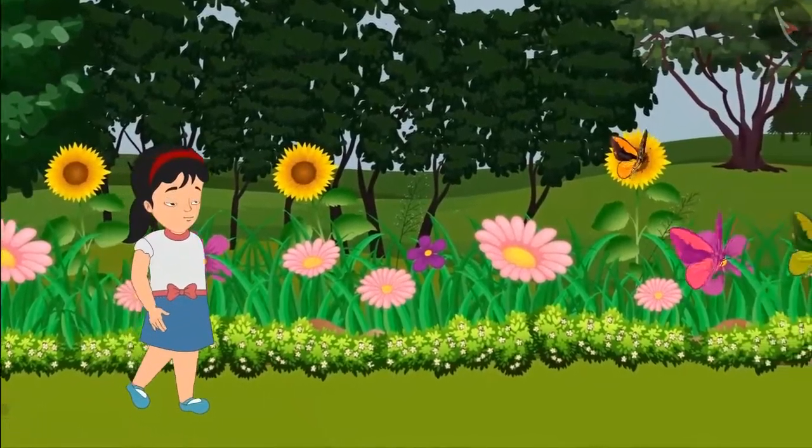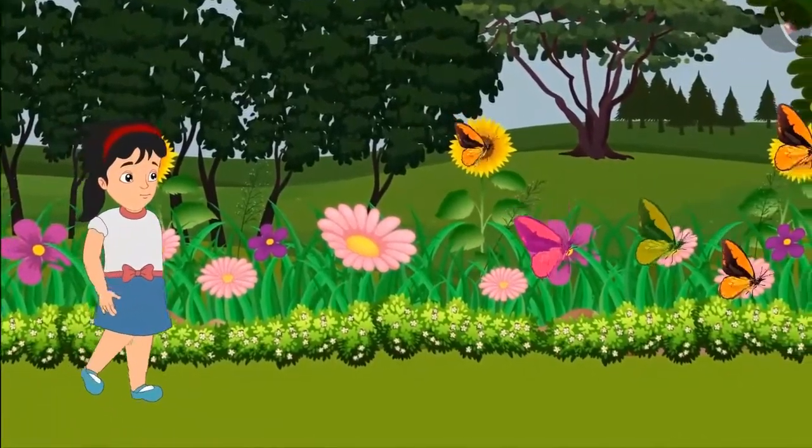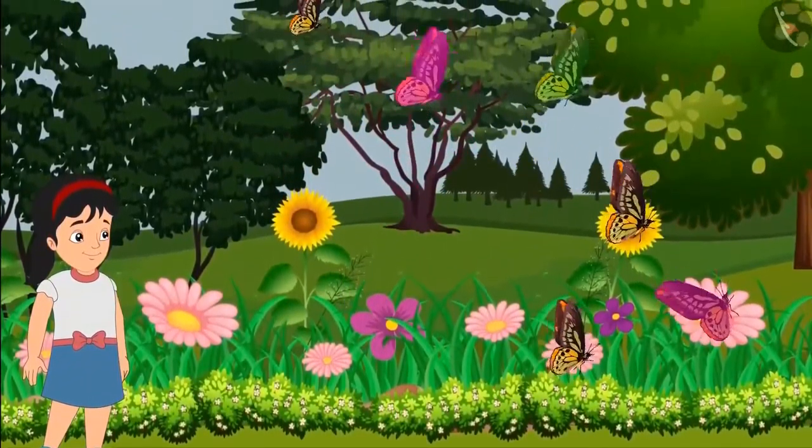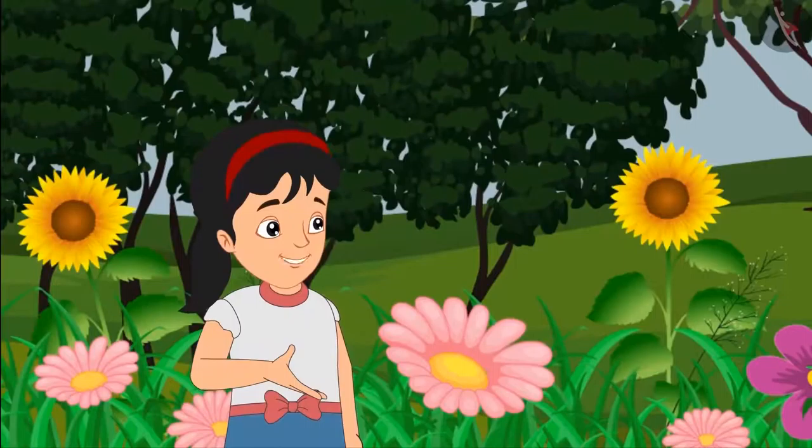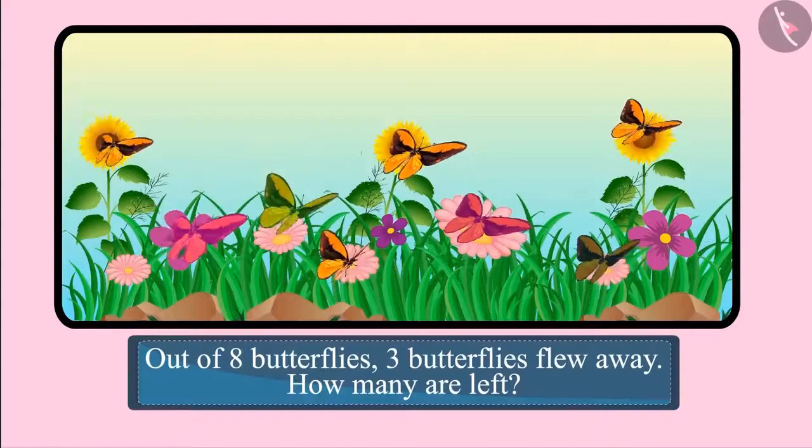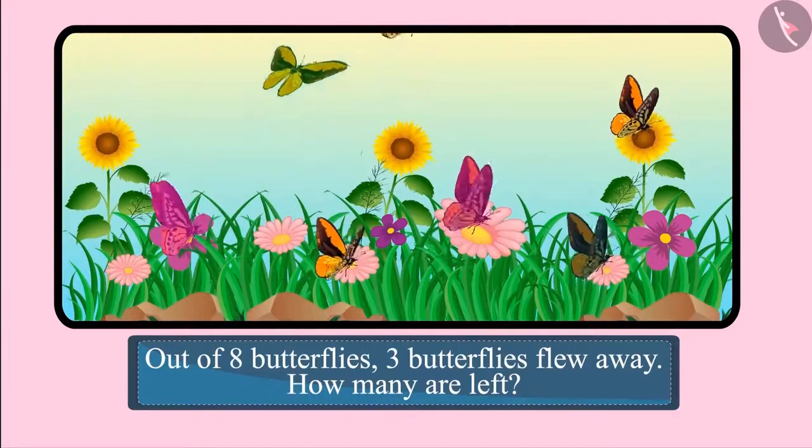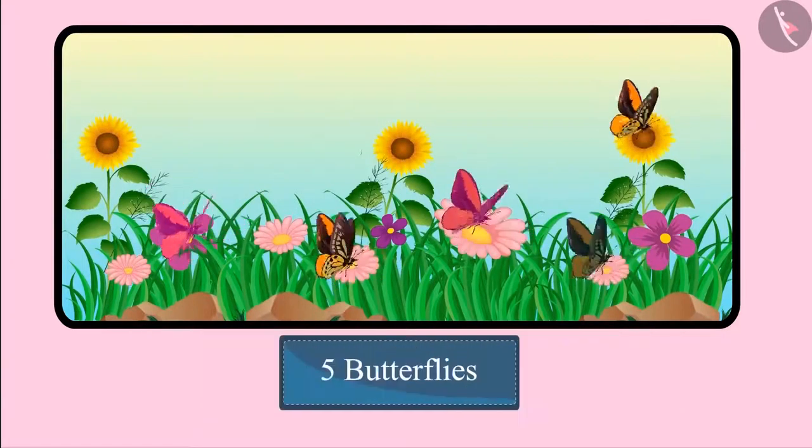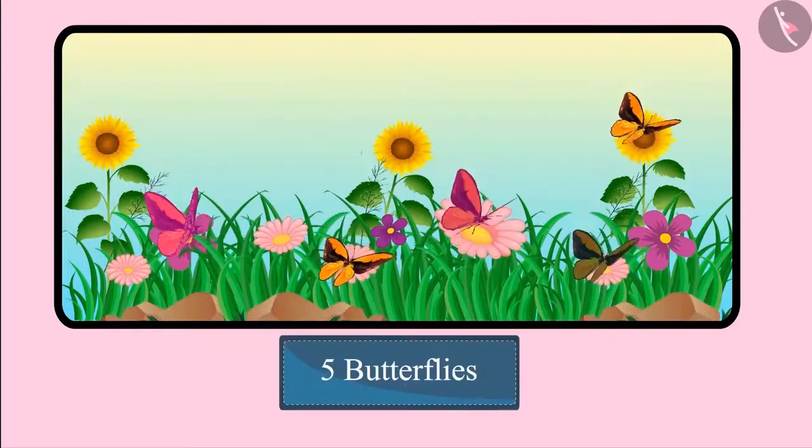Pinky goes a little closer to the flowers to see the butterflies more closely, and three butterflies fly away. Oh-ho! Three butterflies flew away. Out of eight butterflies, three butterflies flew away. So how many butterflies are left on the flower? Five butterflies are left, Mummy.